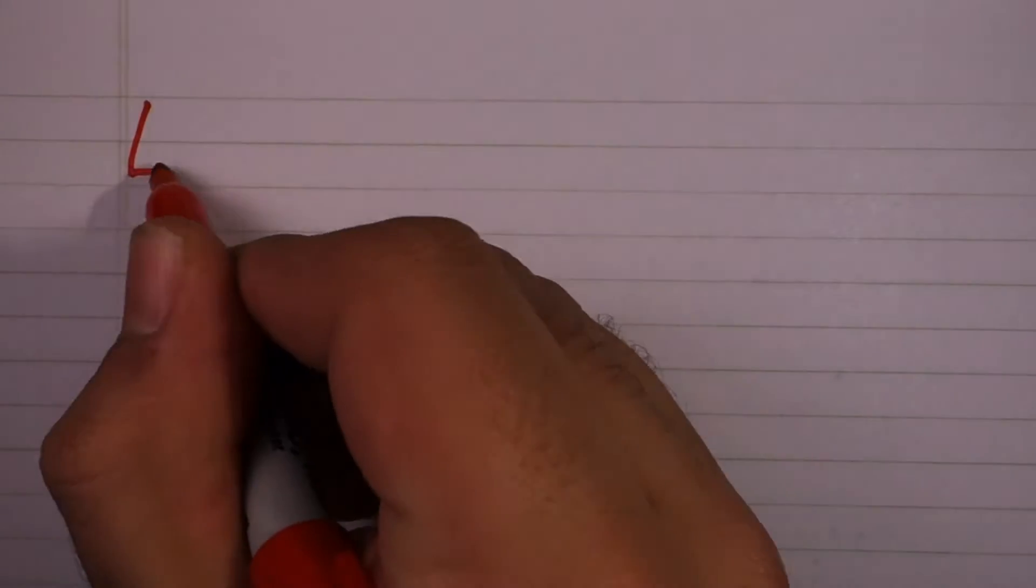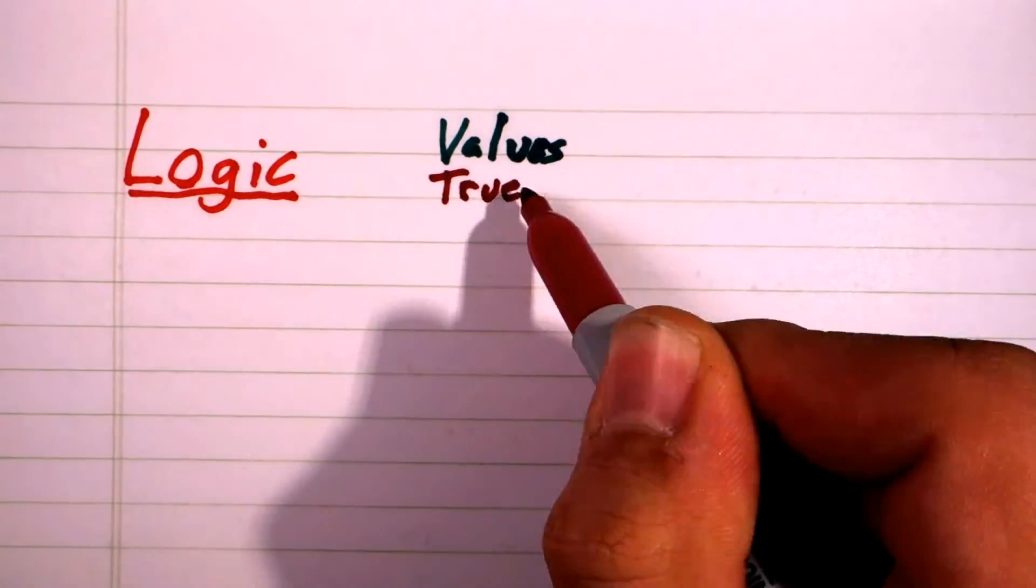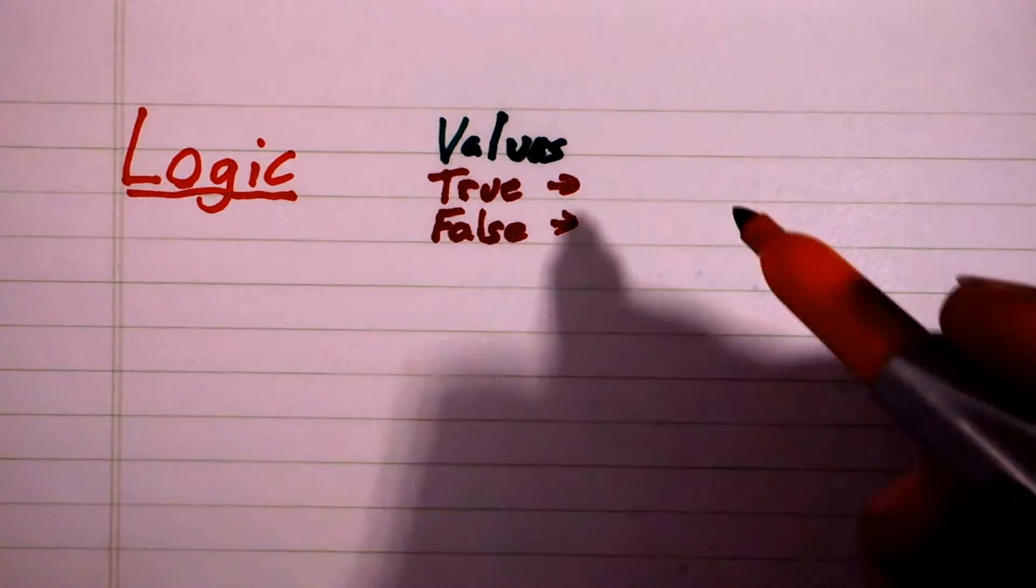When discussing Boolean logic when it relates to programming, it is often useful to step back and look at the foundations of logic. At the root of logic are two fundamental values, true and false.